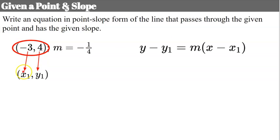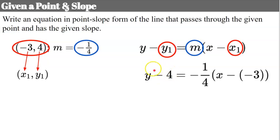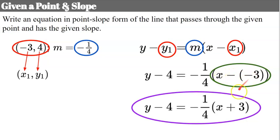We identify the point: x₁ is negative 3 and y₁ is 4. We replace y₁ and x₁ with those values and use the slope of negative one-fourth for m. So: y minus 4 equals negative one-fourth times the quantity x minus negative 3. We can simplify x minus negative 3 to x plus 3. Note that when you see an equation with a plus sign, the x coordinate is negative.